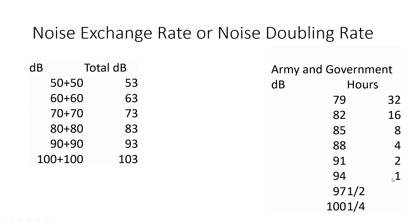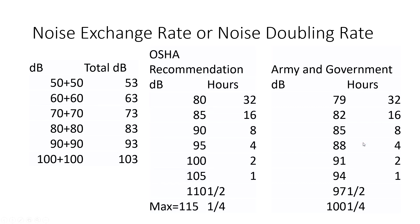The US Army or government agency recommends that someone can be exposed to 85 decibel noise level and spend up to 8 hours at that level. However, if we add 3 decibels to 85 — essentially doubling the noise to 88 decibels — then that person can only spend half the time, which is 4 hours. Conversely, if the noise is reduced by half, which is 3 decibels less at 82 decibels, the person can spend up to 16 hours at that noise level.